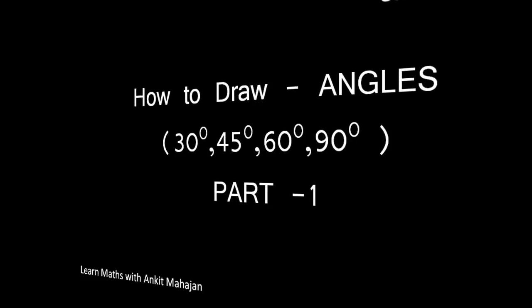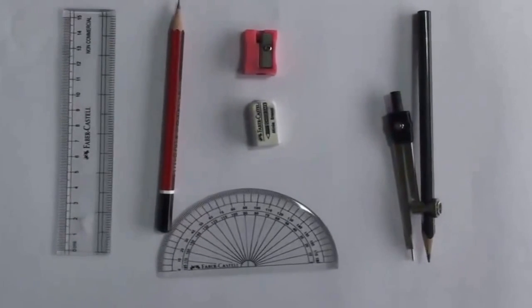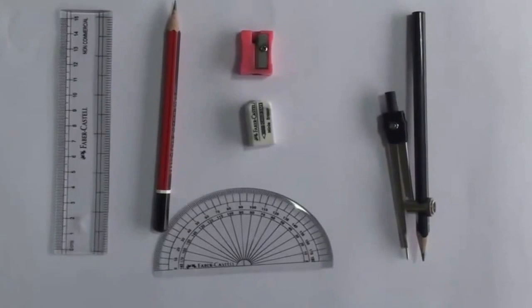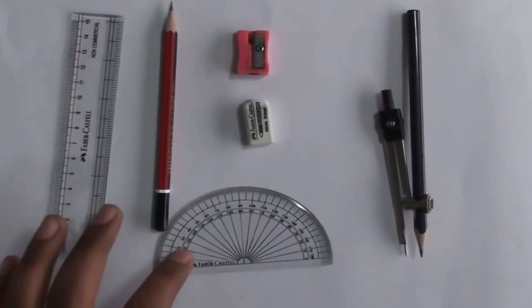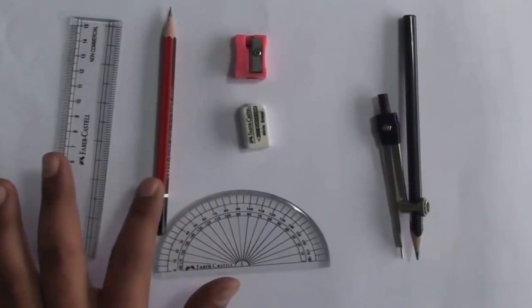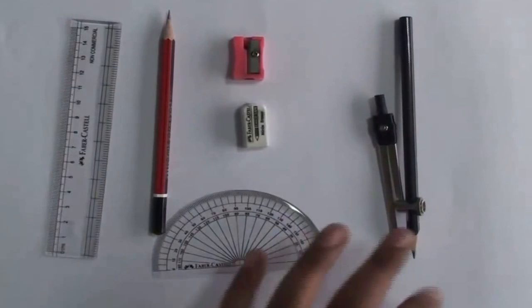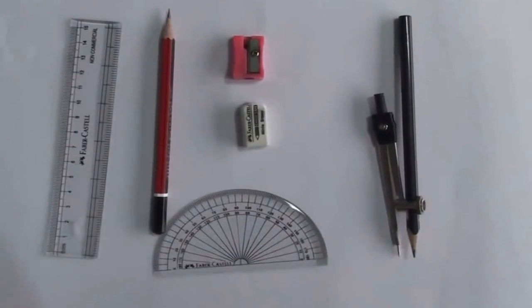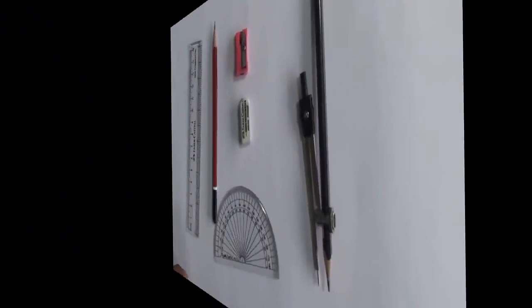What all do we need to make constructions? We need a scale, a protractor to measure angles, a very well sharpened pencil, a good rubber, a sharpener, and of course a compass to make angles.